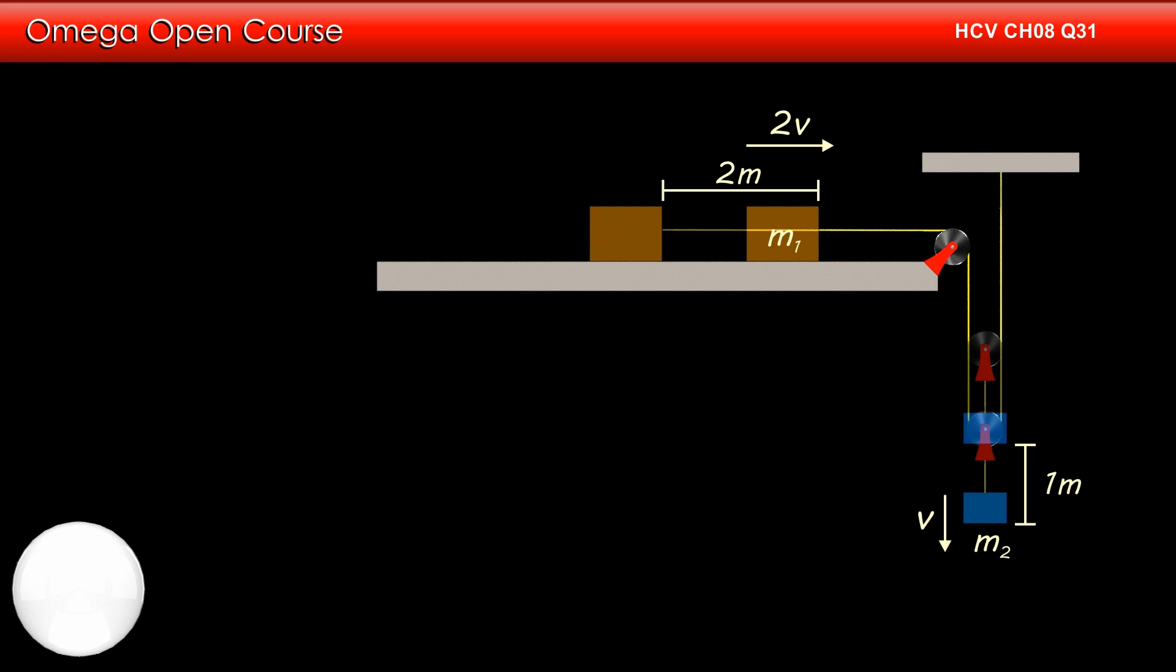If mu be the coefficient of kinetic friction between the block and the table, then the force of friction between the table and the block is mu m1g. As 1 kg block moves down by distance h, the work done by gravity on the system is m2 into gh.